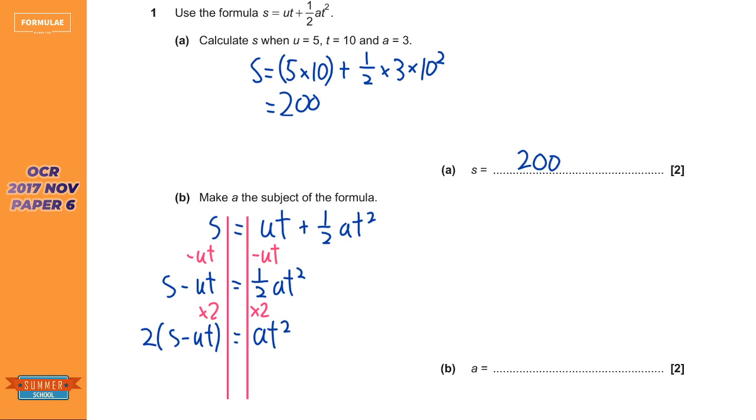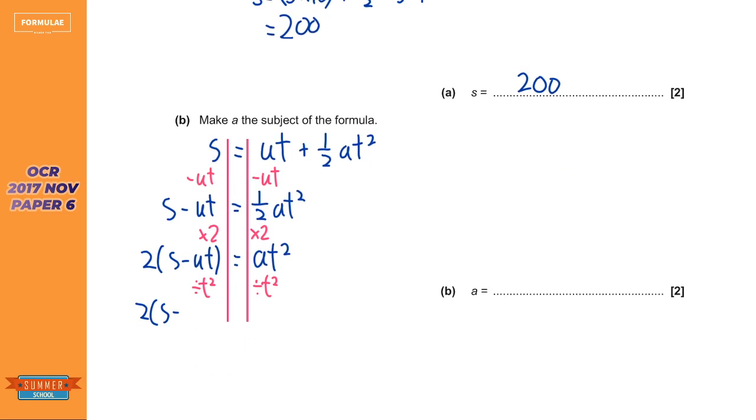I don't need to expand the bracket. Now we've got that T squared there. So again, all I'm just going to do is just divide by T squared. So divide by T squared. Divide by T squared. And that leaves, I'm just going to move it down a bit. That leaves 2 brackets S minus UT over T squared equals A.